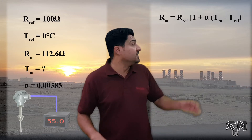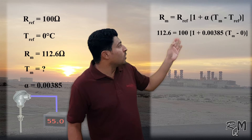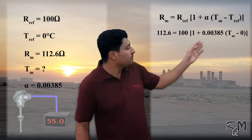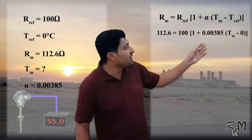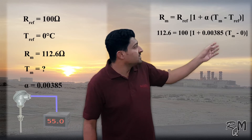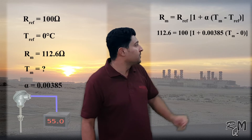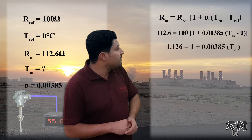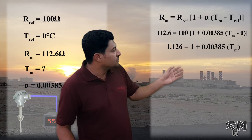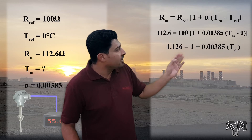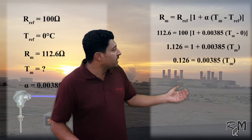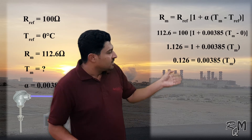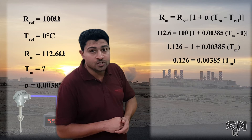Now I will insert these values into the equation. The measuring resistance 112.6 ohms equals the reference resistance 100 ohms, times the square bracket 1 plus alpha 0.00385, multiplied by the measuring temperature minus the reference temperature 0 degrees centigrade. I will solve this equation for measuring temperature. Bringing 100 ohms to the other side, it becomes 1.126 equals 1 plus 0.00385 multiplied by the measuring temperature.